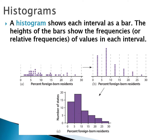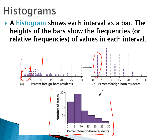If we have this dot plot showing the percent of foreign-born residents across all 50 U.S. states, we can see we're separating them into intervals of five percentage blocks: 0 to 5, then 5 to 10, and so on. We count how many dots are in the 0-to-5 interval, then do the same from 5 to 10, and eventually we end up with our histogram.